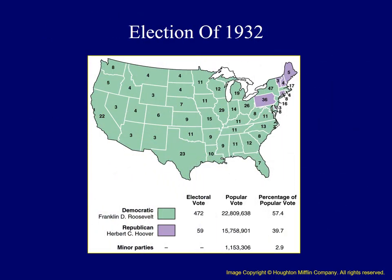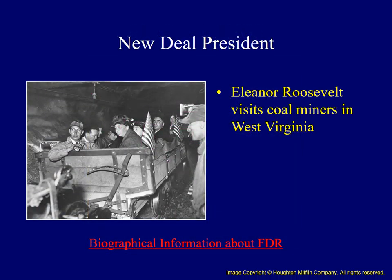This map identifies the Roosevelt landslide of 1932 — notice all of the green on this map. Democrats also gained majorities in the House and the Senate. Franklin's wife was Eleanor Roosevelt, and she became one of the most active First Ladies in U.S. history. Here we see her visiting coal miners in West Virginia. Mrs. Roosevelt was able to travel to places where her husband could not go due to his disability. There's a hyperlink below to additional information about Franklin Roosevelt.